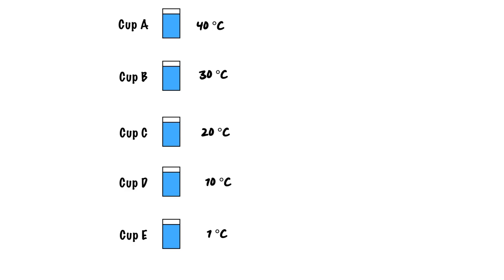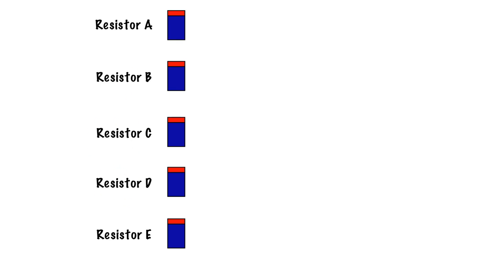That's all well and good when talking about temperature cups, but what does that have to do with electrical? Let's throw some resistors at it. We've got resistor A, B, C, D, and E. Again, we'll start with a neutral resistor — resistor C — and then add some charges to resistors B and A, and resistors D and E. Neutral charge means it has no positive or negative charge at all; it is just flatline neutral. So we're going to say resistor B has 50 less electrons — a deficiency of electrons, which means it has a positive charge. Resistor A has 100 less electrons, or a positive charge of 100. Resistor D has an excess of 50 electrons, or a negative charge of 50, and resistor E has an excess of 100 electrons, or a negative charge of 100.